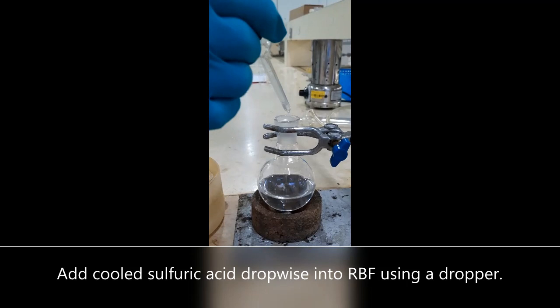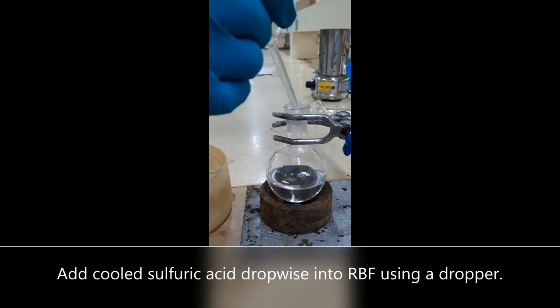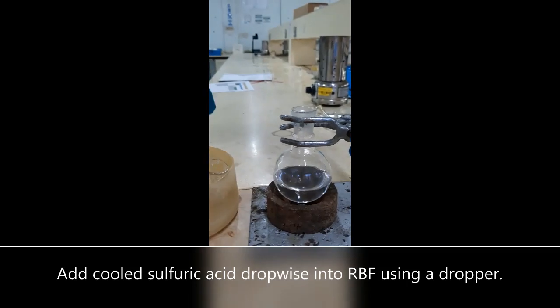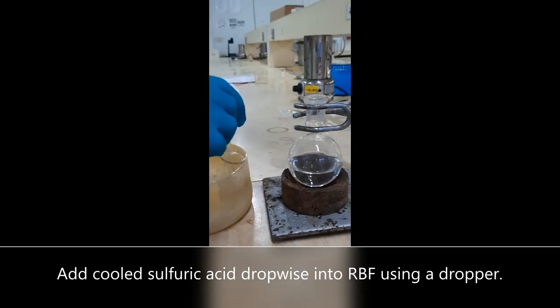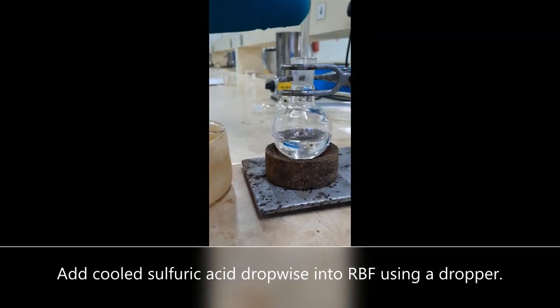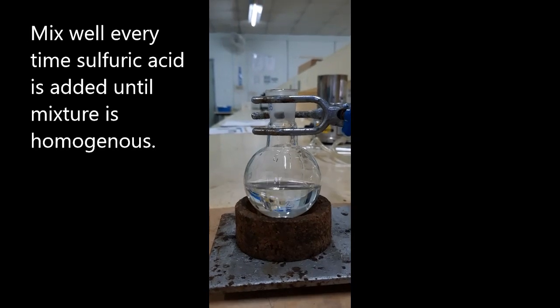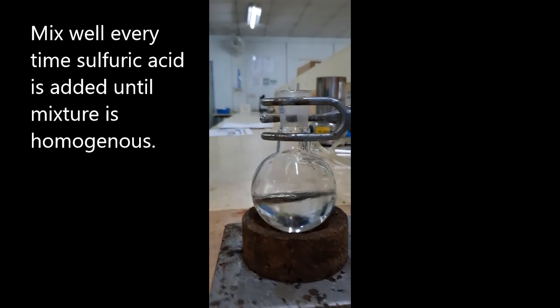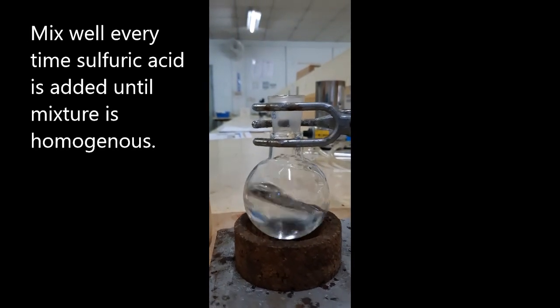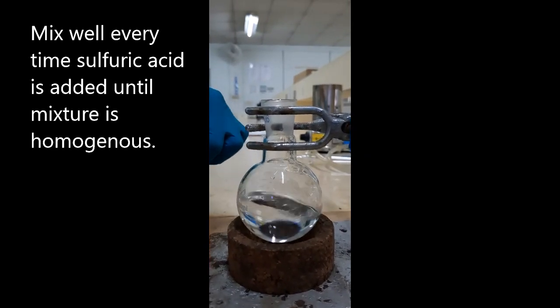Using a pasture pipette, add cool sulfuric acid in small portions into a round bottom flask containing ethanol and acetic acid. Continuously swirl the round bottom flask while adding the sulfuric acid to ensure a thorough mixing.